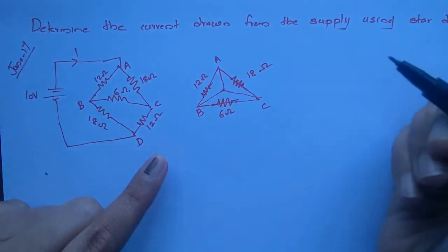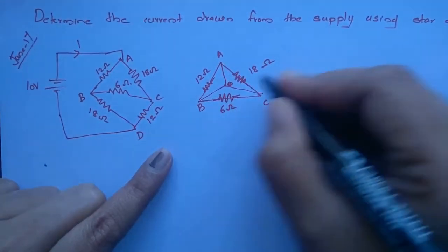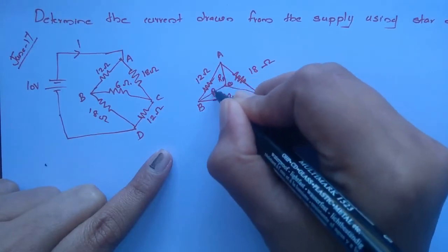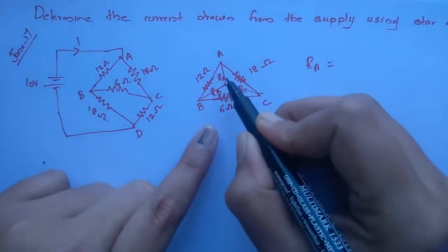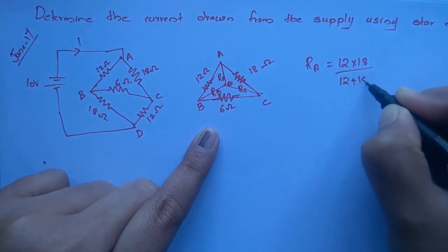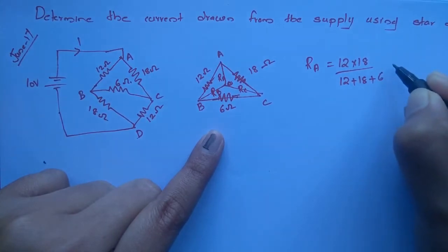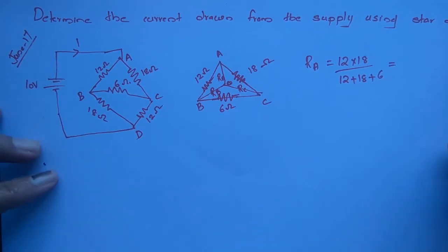Now we are going to convert it into an equivalent star connection, with a centre point O. I am notating the star resistances as Ra, Rb, and Rc. While converting delta to a star connection, we find the product of the adjacent sides divided by the sum of all the branches of the delta connection.